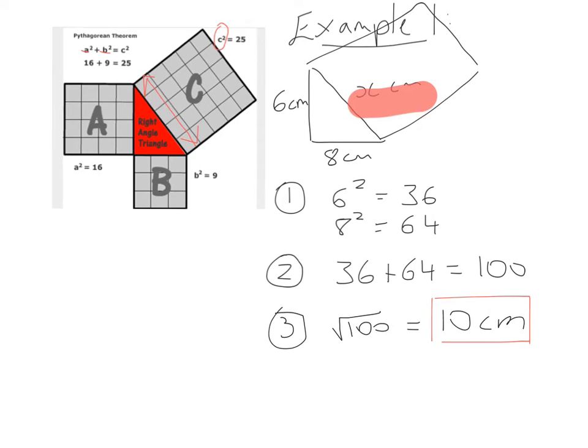That means the hypotenuse of this triangle is 10 centimeters. Our little reality check or common sense check will then say okay, 10 centimeters is longer than 6 and 8 centimeters, and the hypotenuse is always the longest side of a right angle triangle, so hopefully we've done that correctly.